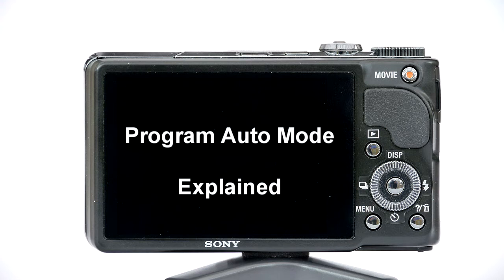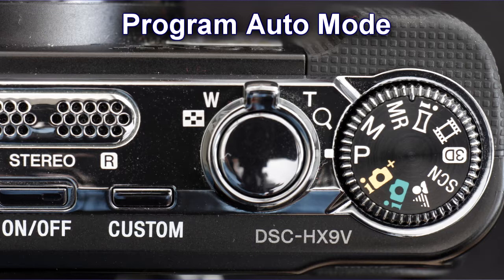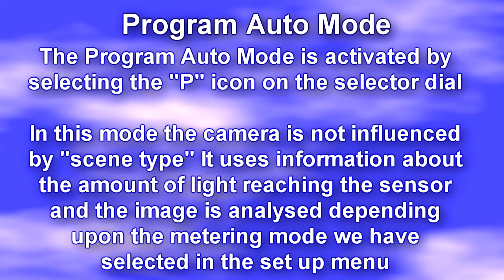In this mode you have some control of the automatic exposure determination by the camera and thus the quality of the final image produced. The P mode is selected by turning the selector dial to the P position. In this mode of exposure the camera is not influenced by any scene type determination. The exposure is determined by analysing the light levels reaching the imaging sensor from the lens.